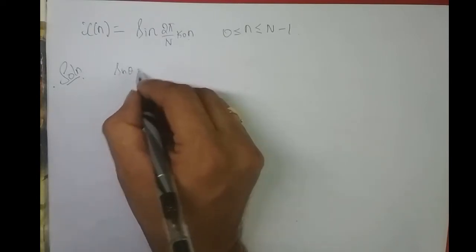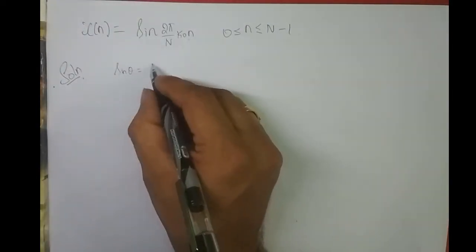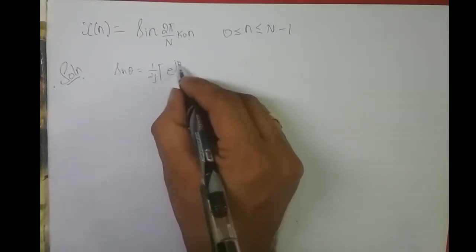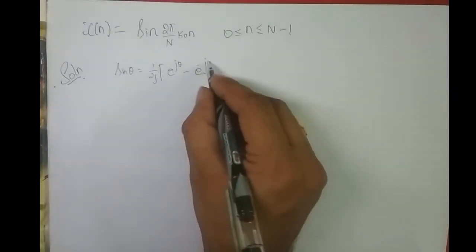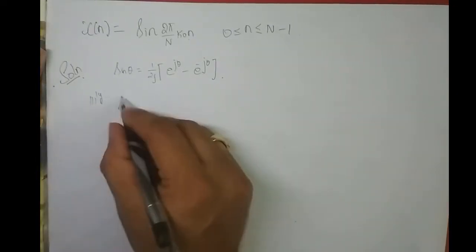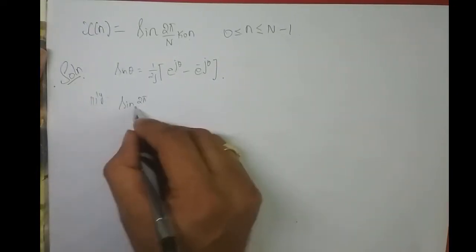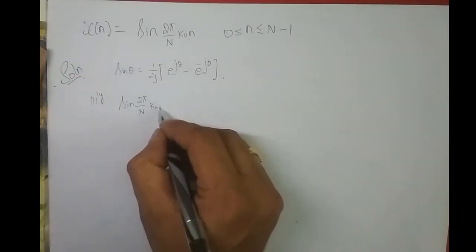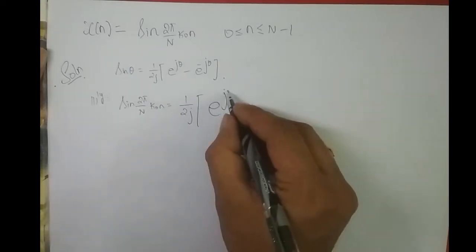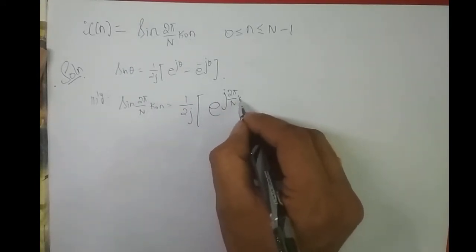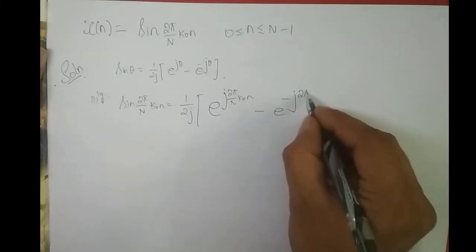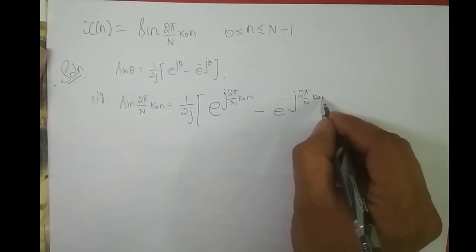What is sine theta? Sine theta in terms of exponential is (1/2j) · (e^(jθ) − e^(−jθ)). Similarly, sin(2π/N · k₀n) = (1/2j) · (e^(j2π/N · k₀n) − e^(−j2π/N · k₀n)).